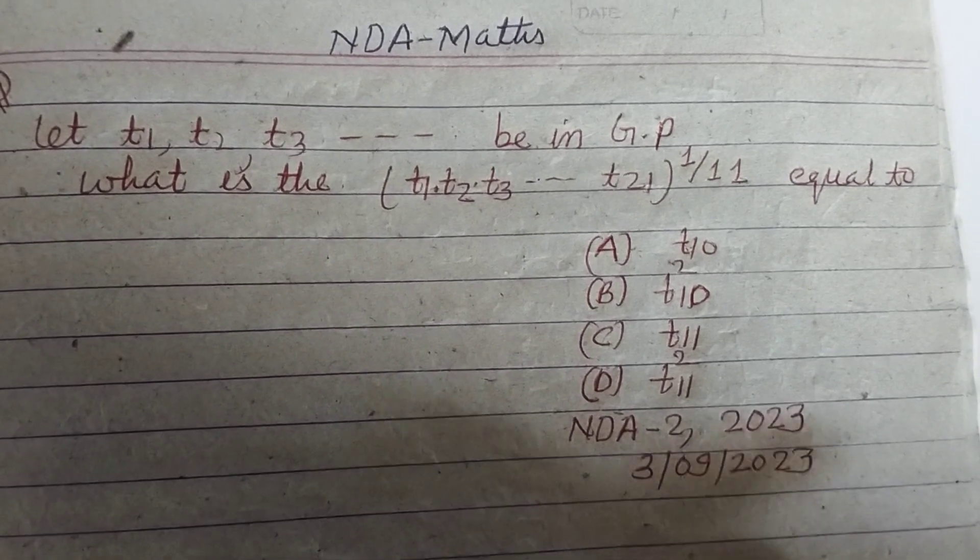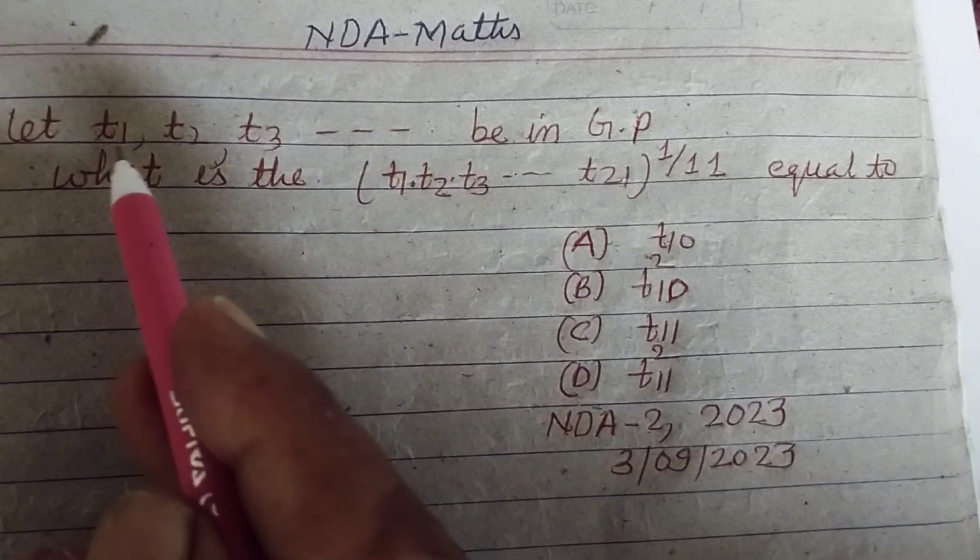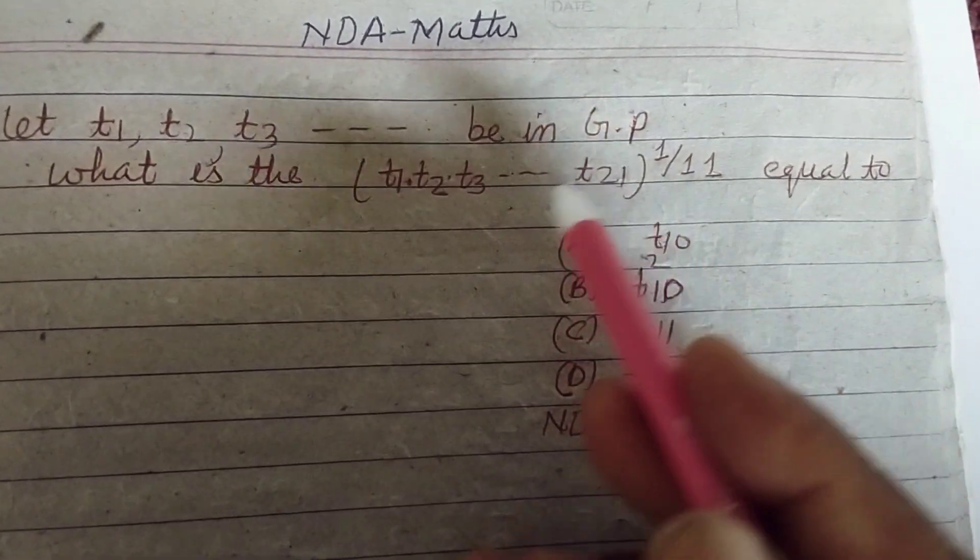Hello student. Welcome to this YouTube channel. Question from NDA 2nd 2023: Let t1, t2, t3 be in GP.